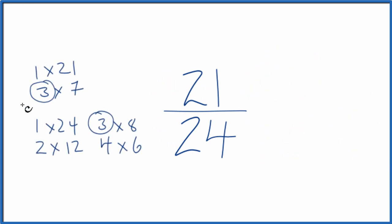So 21 divided by 3 that gives us 7 and then 24 divided by 3 gives us 8.